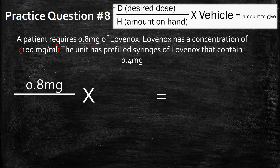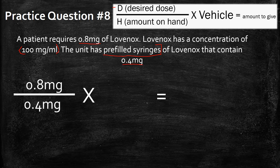You have to look at the fact that these are pre-filled syringes — you can't give a fraction of a pre-filled syringe. If you've ever seen Lovenox, you can't give a fraction of that. So the actual amount on hand is going to be what comes in these pre-filled syringes. In each one there is 0.4 milligrams, so that's going to be the amount we have on hand.